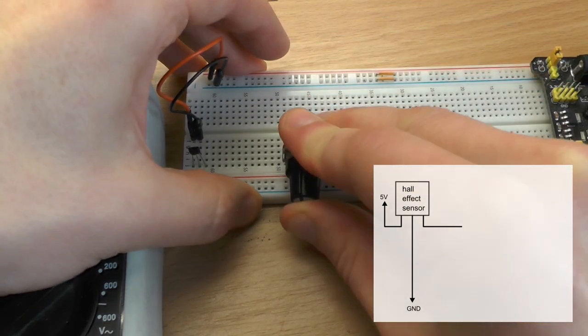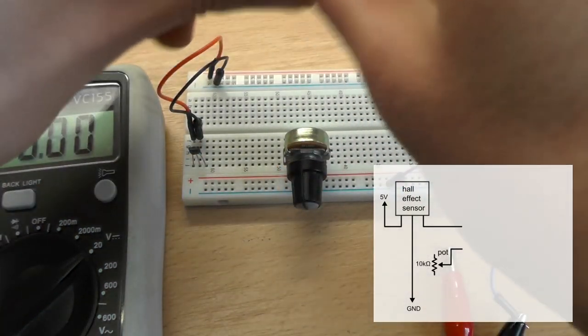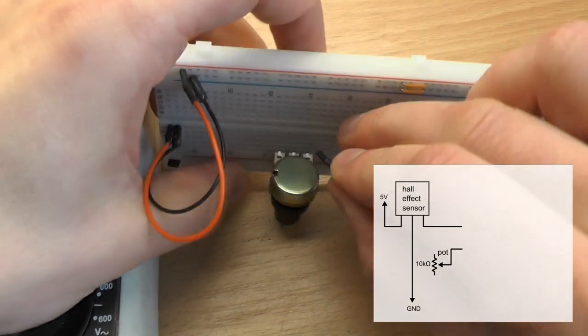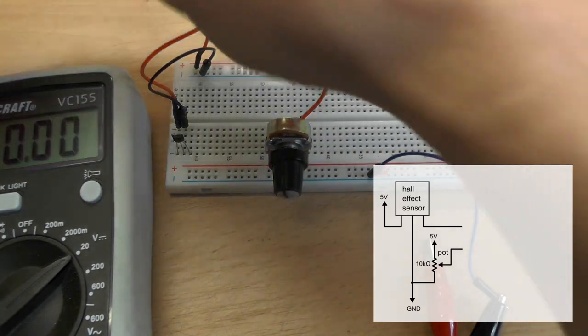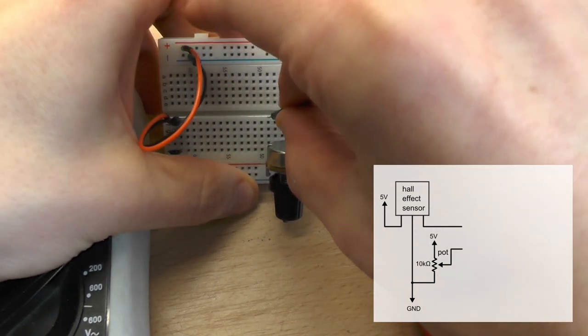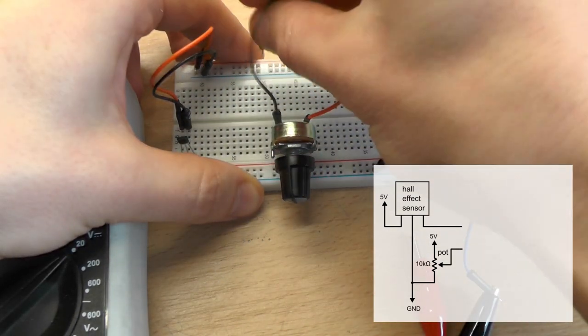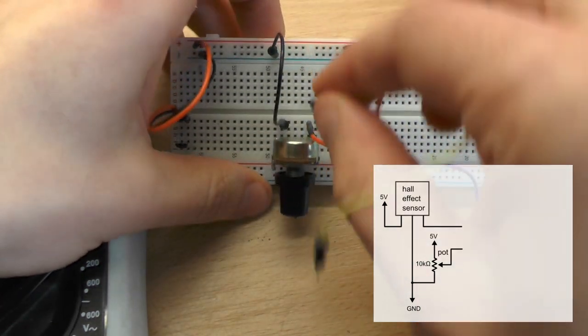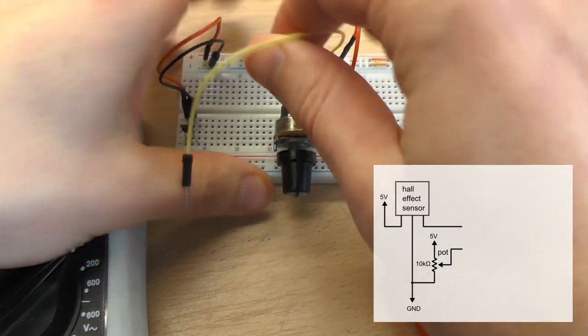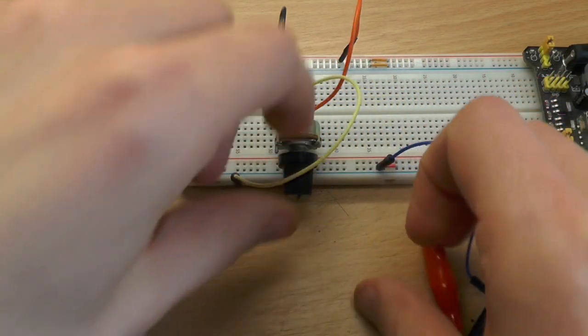So you just have to connect this to ground and 5 volts on the outer pins, and then it will work like a voltage divider. So the middle pin is just getting the reference voltage there.